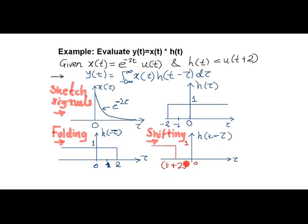By putting t as 0, we can make sure whether h of t minus tau results same as that of h of minus tau.